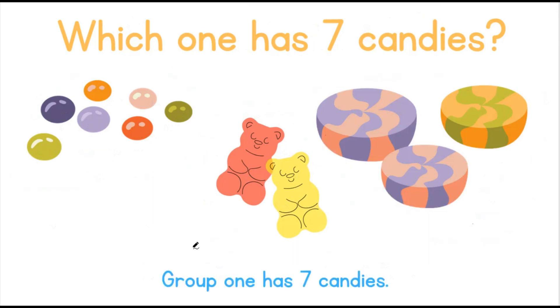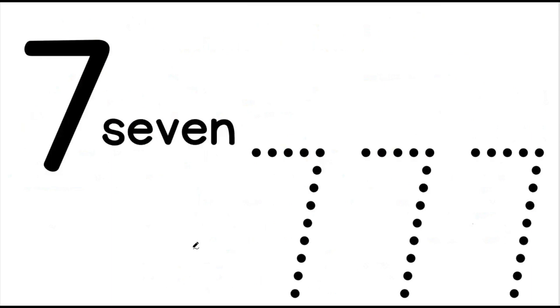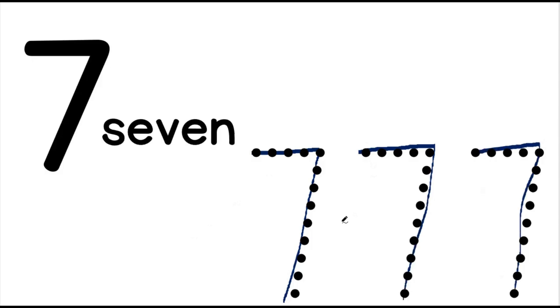Group 1 has 7 candies. Let us write the number 7. We write the number 7 by going straight and then down. Straight and then down. How do we spell the number 7 in words? S-E-V-E-N spells 7. This is how we write the number 7.